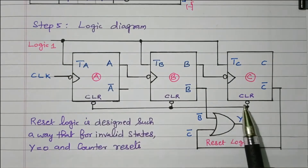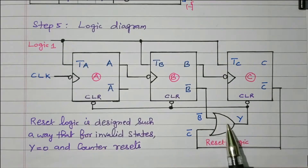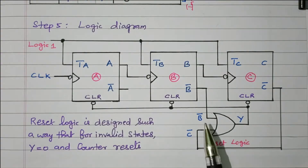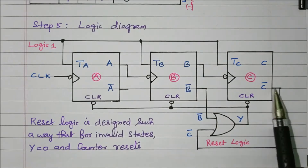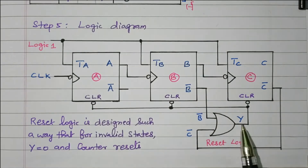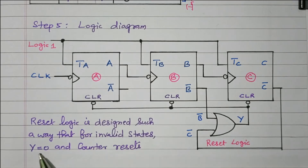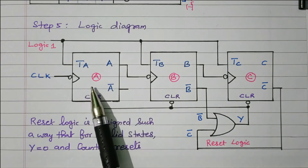The clear signal handles the constraint that we need only 6 outputs — states 7 and 8 must be reset. The OR gate implements Y = C-bar + B-bar. B-bar (complement of B) and C-bar (complement of C) are connected as inputs to the OR gate, and its output Y is given to the clear input of all flip-flops. The reset logic is designed so that for any invalid state, Y equals 0 and the counter restarts. It executes states 0 to 5; if states 6 or 7 appear, it resets and starts from 0 again.